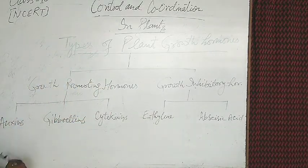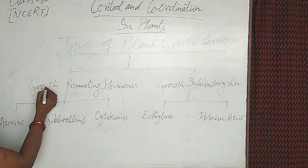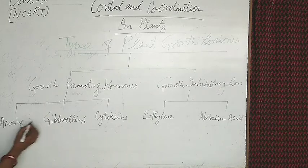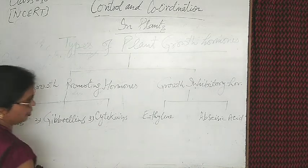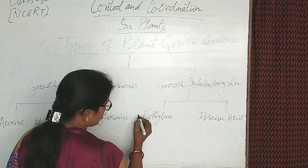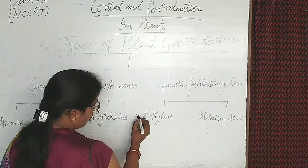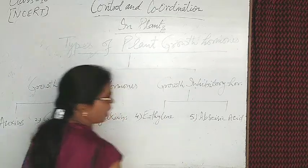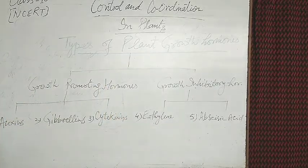The growth-promoting hormones are further divided into three parts: first, auxins; second, gibberellin; and third, cytokinin. The growth-inhibitory hormones are number four, ethylene, and number five, abscisic acid.